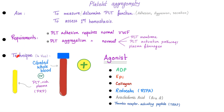What is the technique? You get some blood from the patient, preferably citrated blood in a blue top tube, or you can get platelet-rich plasma — not whole blood, just plasma. Then you add an agonist: ADP, epinephrine, collagen, ristocetin, arachidonic acid, or TRAP.